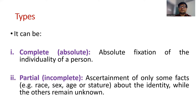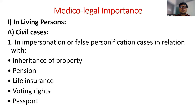Partial identification is the ascertainment of only some facts about the identity while others remain unknown. So certain factors like race, sex, age, stature, and religion can be determined, but some other details remain unknown. This is called partial identification.